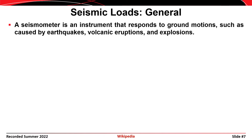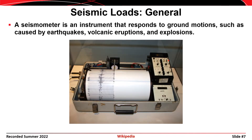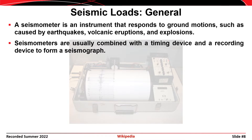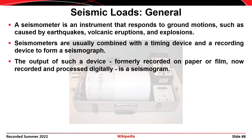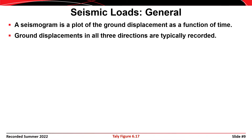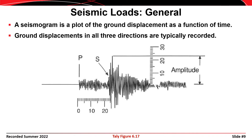A seismometer is an instrument that records ground motions from all different types of sources. Most now record digitally rather than using an analog trace. A seismometer combined with a timing device gives you a seismograph, and the output is a seismogram — a plot of ground displacement as a function of time. Ground displacements occur in all three directions and are recorded in all three, but lateral movements are typically more pronounced than vertical movements.